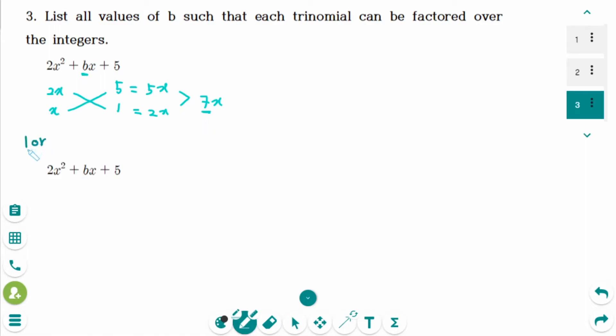Or 2x times x makes 2x squared. Then cross multiply. So b could be minus 7.